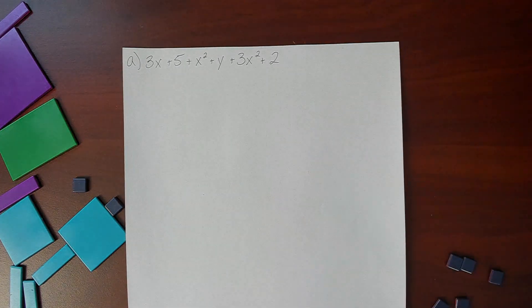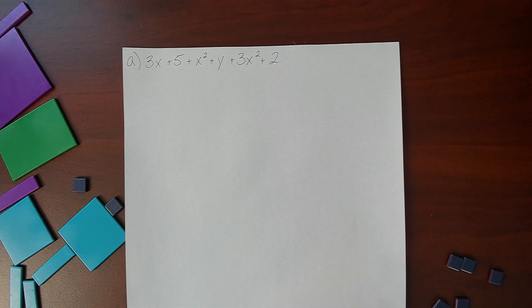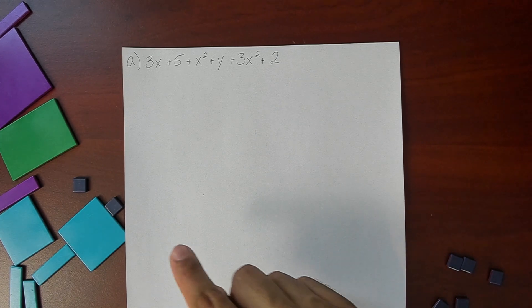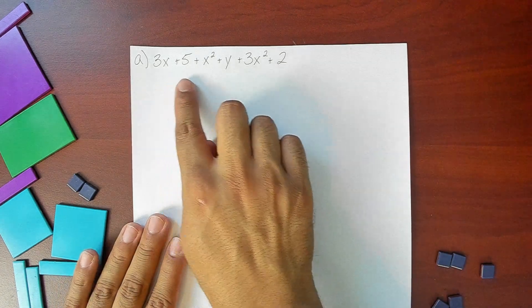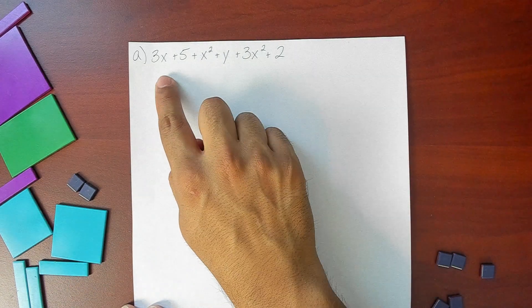Now when I'm trying to combine this expression and combine all the like terms, first what we need to do is just get all of these algebra tiles on our paper that represent this expression here.